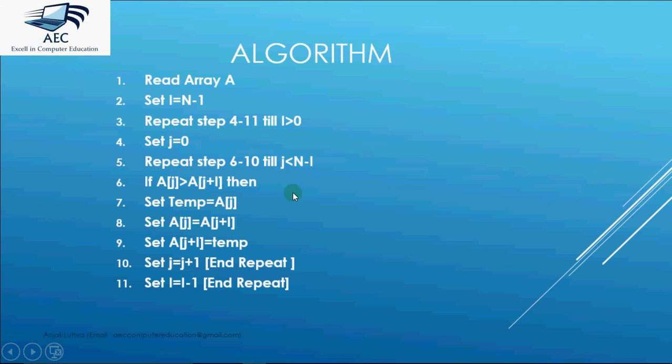j becomes 1 and 1 less than 1 is false. It gets over. i becomes 8. 8 is greater than 0. j again becomes 0 and this time the loop will work twice. So a[0] will be compared with a[8] and a[1] will be compared with a[9] and so on. The process will be repeated and finally we'll have our array in sorted order.